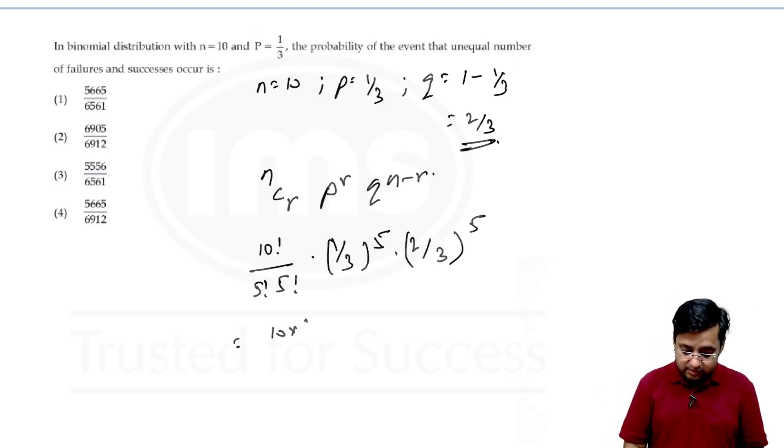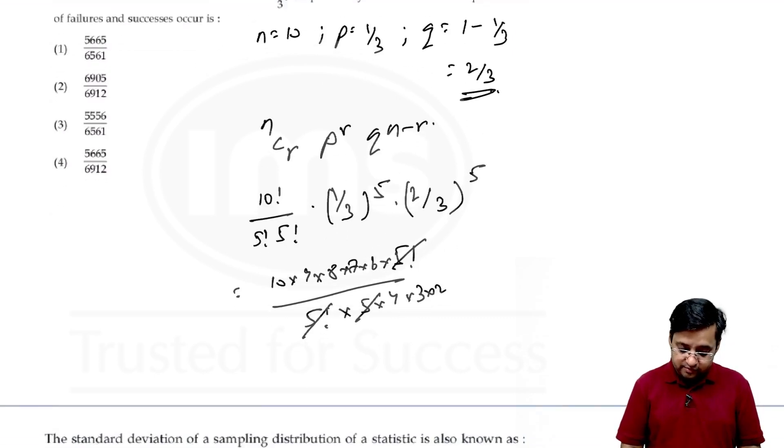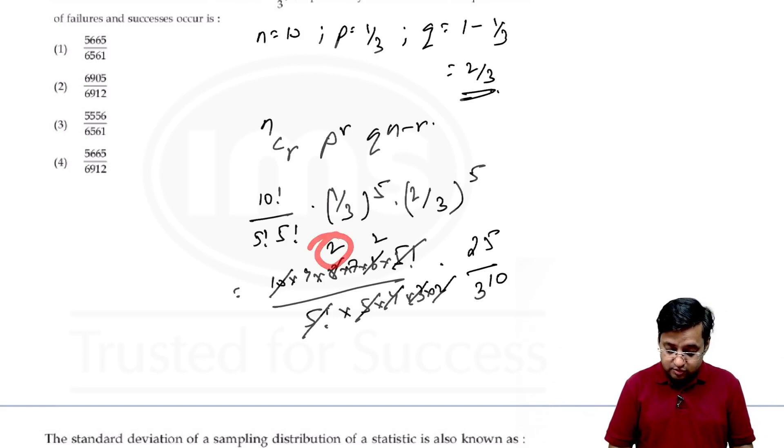So we have 10 into 9, 8, 7, 6 of course 5 factorial, and this 5 factorial are going to cancel out and we are left with 5, 4, 3, 2 and 1. So 5, 2 is 10. Now we have 2 to the power 5 by 3 to the power 10. Now we have 4, 2s and this is also going to give me 2. Now this 2 and 2 we added and we are going to get 2 to the power 7.